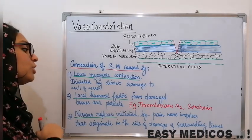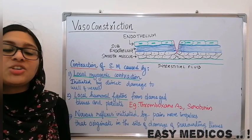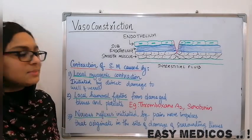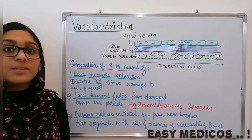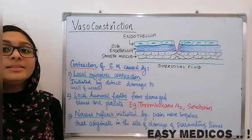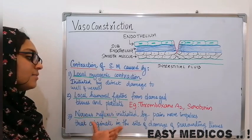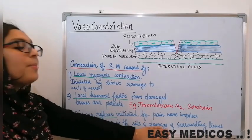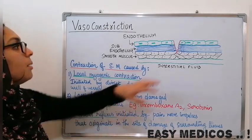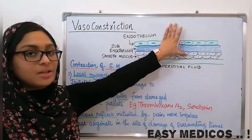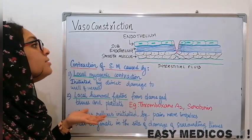Then there are local humoral factors released by the damaged tissues and platelets — for example, thromboxane A2 and serotonin. That means nerve reflexes, initiated by pain nerve impulses originating from the site of damage.